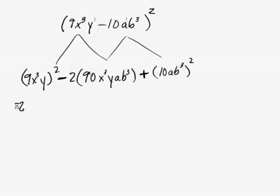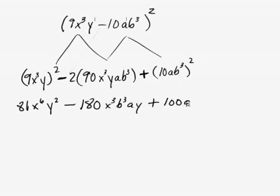9² is 81. (x³)² is x^6. And y² is y². Minus 2 times 90 is 180. x³. And I'll just go ahead and switch things around here. b³ay. And this will be 10², which is 100a²b^6. Okay.